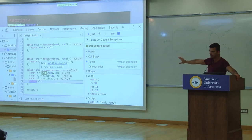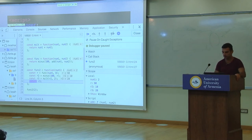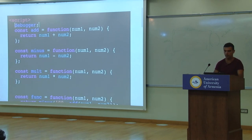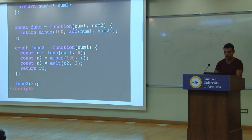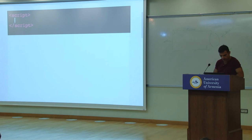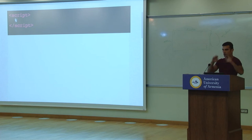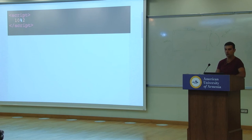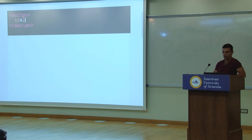Now let's write a function that's a bit more useful. One mathematical operator we haven't discussed yet is the modulo operator. It looks like a percent sign. It takes the remainder of dividing two numbers. For example, 10 modulo 2 — 2 is evenly divisible into 10, so the remainder would be zero.